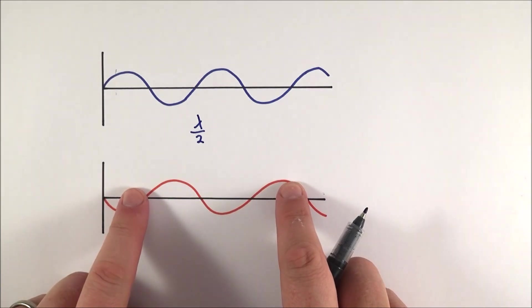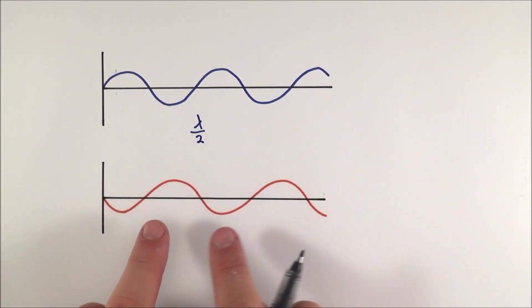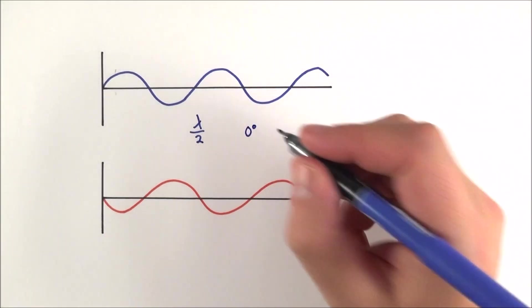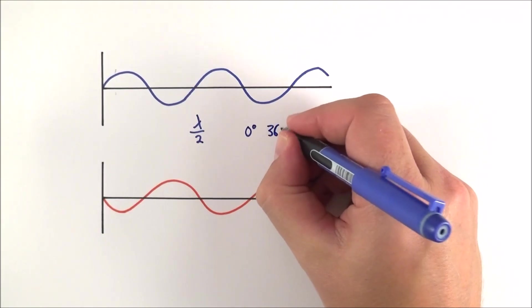If we were to shift this whole thing along by half a wavelength, we find that the two things are then perfectly in phase, which means they'd have a phase difference of zero degrees or zero radians, or indeed 360 degrees or 2π radians, and so on.